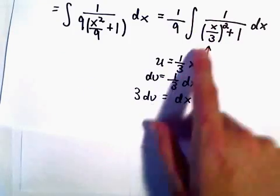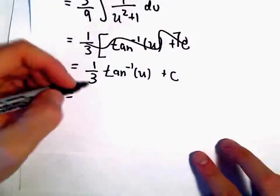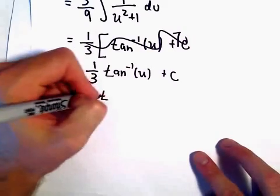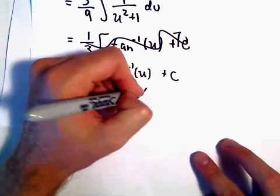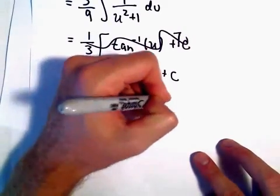So 1 third arctangent of u plus c. And the last thing we'll do is we'll just replace our u with our substitution. And u is 1 third x or x over 3.